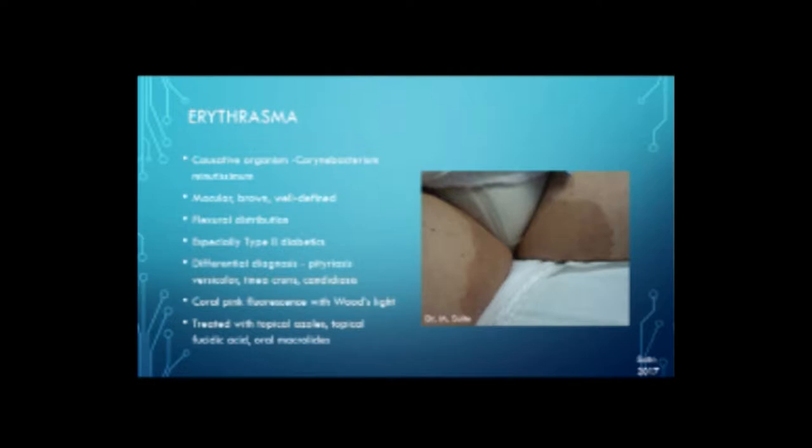Erythrasma is actually a bacterial infection that behaves like a fungal infection. The causative organism is Corynebacterium minutissimum. It causes macular, brown, well-defined lesions in a flexural distribution very similar to a fungal infection, and especially occurs in type 2 diabetics. The differential diagnosis includes pityriasis versicolor, tinea cruris, or candidiasis. We use a Wood's lamp to shine on it and get a coral pink fluorescence. It's treated with topical azole antifungals, topical fusidic acid, or oral macrolide antibiotics.